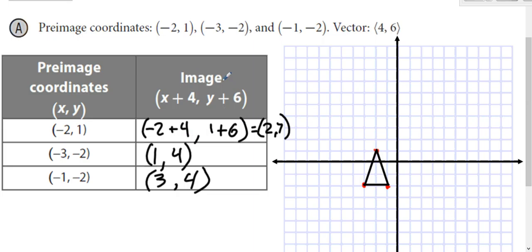We'll do the same thing with our new coordinates for the image. It's over at 2, 7. Plot the point. And then 1, 4. And 3, 4. And you can draw that triangle. You can see it's the same shape, it just got shifted. You can even count how much it got shifted. If you wanted to, you could just count it out. It went to the right 4, up 6, because that's what the vector says.